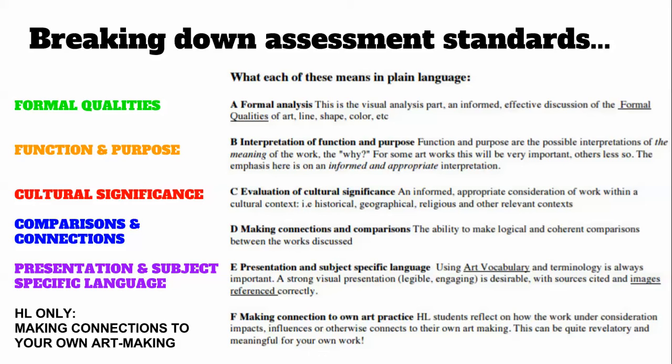Contextual qualities cover function and purpose and cultural significance — two separate parts. Function and purpose has to do with the meaning behind the work and why it was created. This is based on your research. You are demonstrating that you have done thorough research on the artwork and could stand up in a gallery and teach others about it — describing what was happening historically, where it was made, what was going on in the artist's life, the artist's intent, the symbolism, and the imagery.